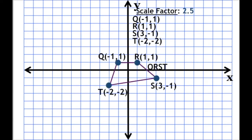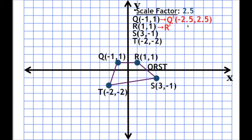Finally, we have a quadrilateral with a scale factor of 2.5. Do you think our figure is going to get bigger or smaller? It's 2.5, so it's greater than 1 — our new figure is actually going to be bigger than our original figure. Let's start with Q at (-1, 1). Q prime is going to be negative 1 times 2.5 and 1 times 2.5, giving us (-2.5, 2.5). How about R prime? R prime is going to be 1 times 2.5 and 1 times 2.5, which is (2.5, 2.5).